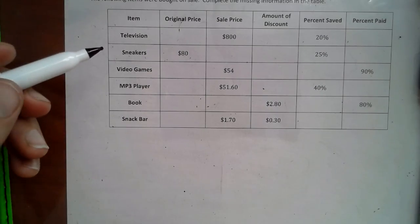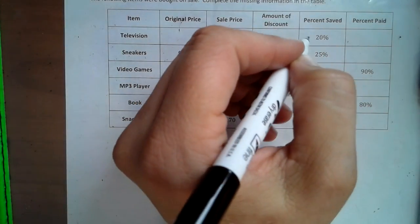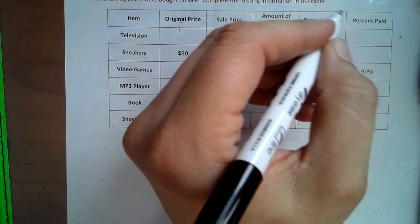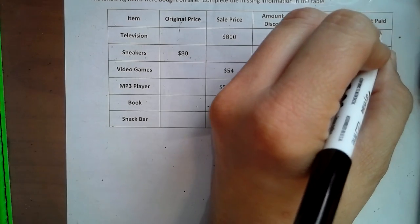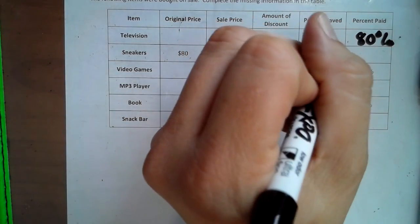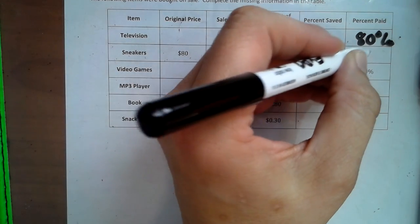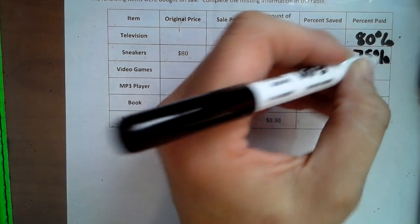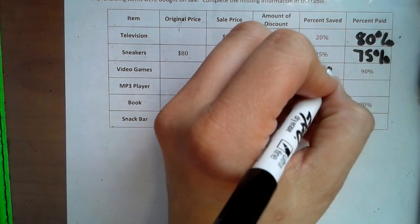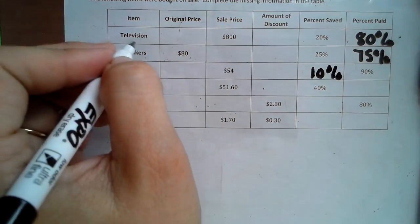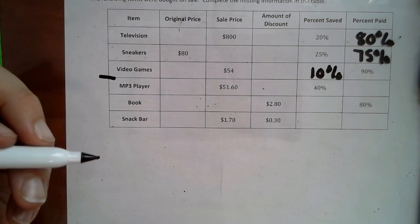So I always say that the easiest columns to fill out on a chart like this is if you're saving 20%, that means you have to pay the other part of the 100, which means 80% is what you pay. So if this is 25, then the percent paid is 75%. And if we pay 90%, we save 10%. That's what we're going to be working with in these three columns. And then from here down is what we're going to be working on later.